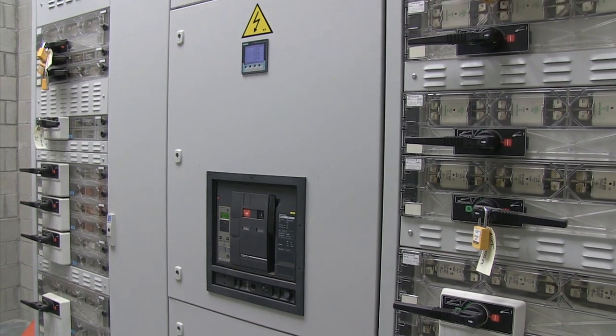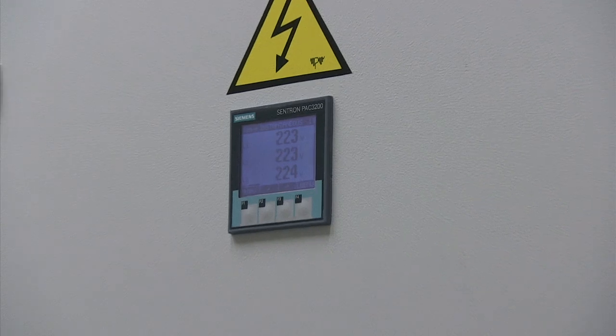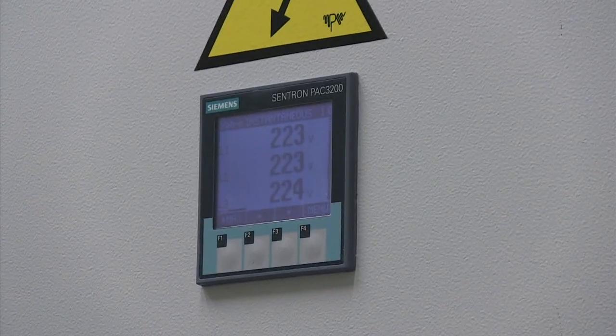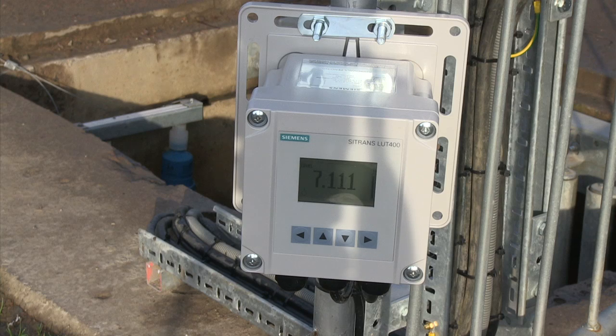When using electricity can't be avoided, it must be consumed wisely to save money, especially since the tariff rate for electricity changes throughout the day. The Siemens Citroen's LUT400 level controller has built-in energy-saving routines.